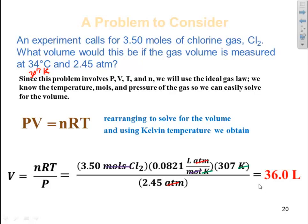Then make sure my units cancel. Everything cancels except for my liters. So therefore, my final answer is, if I multiply the math, multiply the numbers, 36.0 liters. Homework 43.